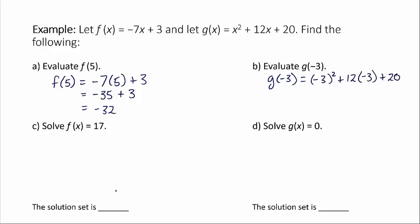All right, so everywhere I saw an x in that function, I replaced it with -3. -3 times -3 is positive 9. 12 times -3 is -36, so we have 9 - 36 + 20. 9 minus 36 is -27, plus 20. And -27 plus 20 is -7.